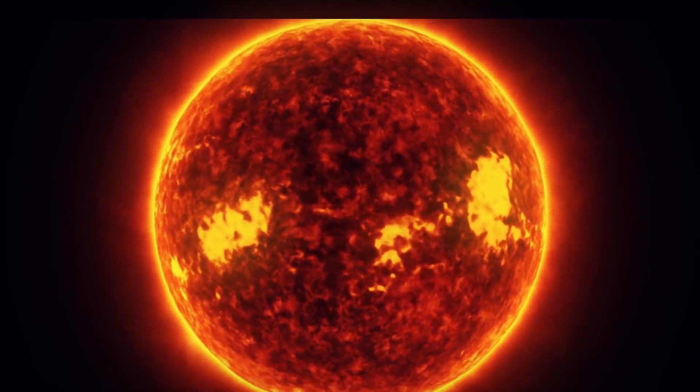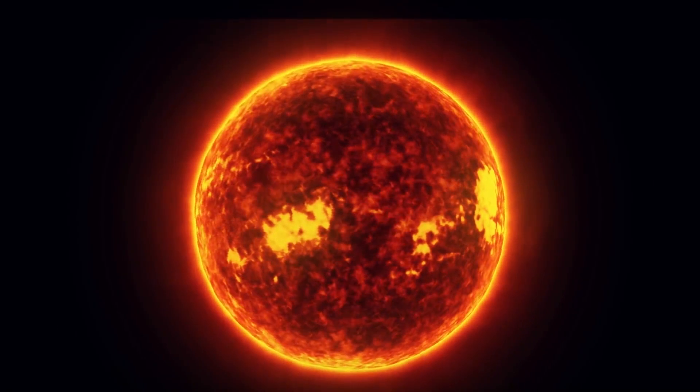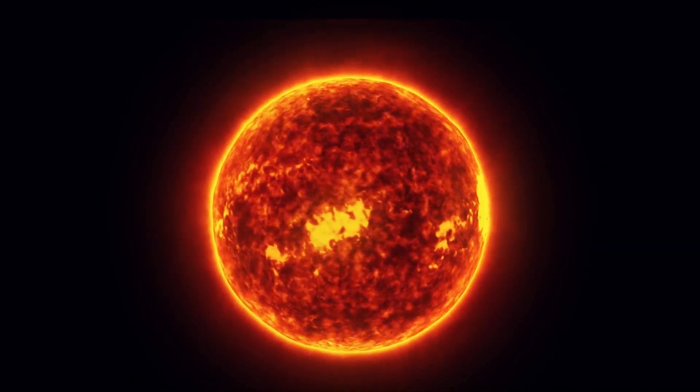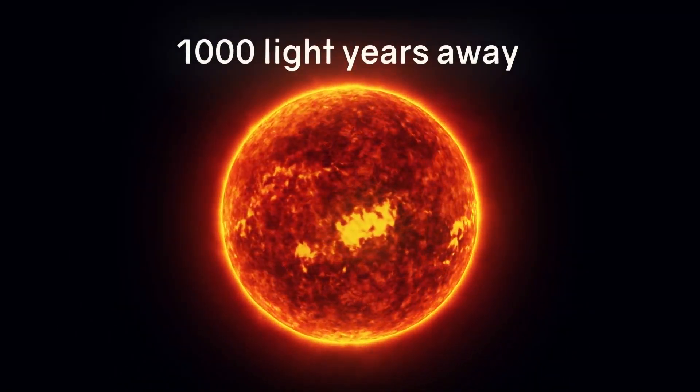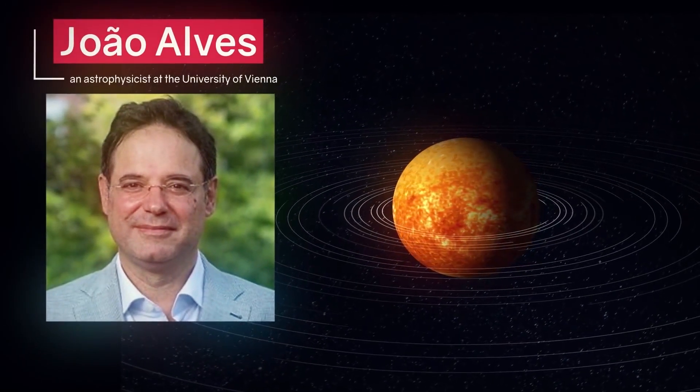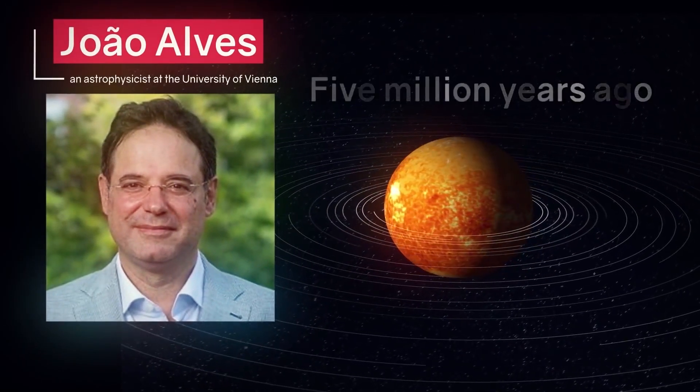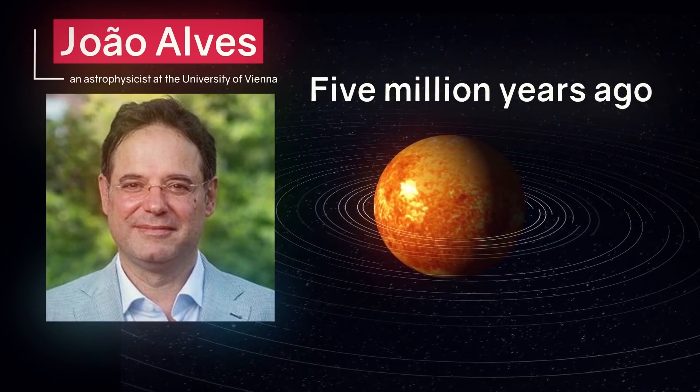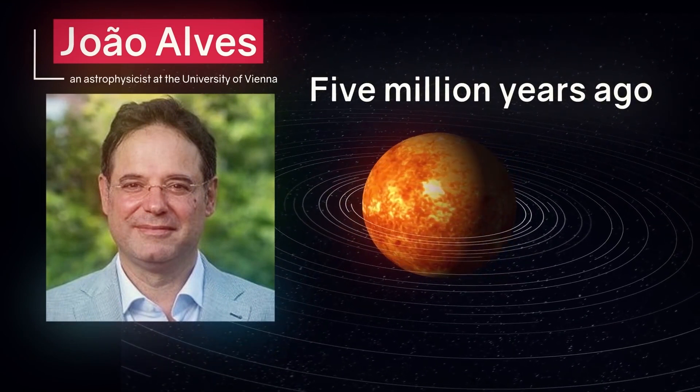Surprisingly, the Sun was not always the center of our planet. The Sun was around 1,000 light-years away from the area when these cataclysmic explosions happened. However, as astrophysicist João Alves of the University of Vienna noted, the Sun approached the core of the bubble around 5 million years ago as it orbited the galaxy center.